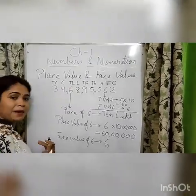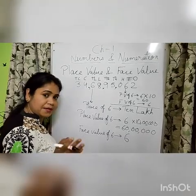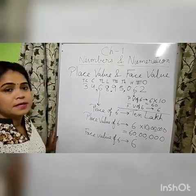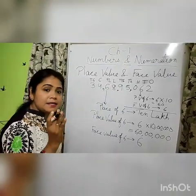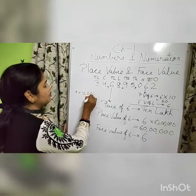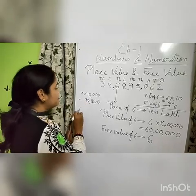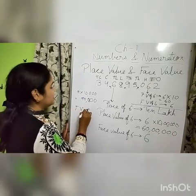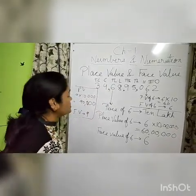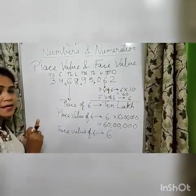So this way we find place value and face value of any digit. Now you tell me: what is the place value of 9? Place value of 9 is 9 into 10,000 — means 90,000. And face value is 9. Please take a screenshot and note it down.